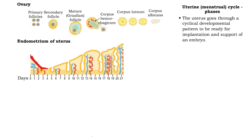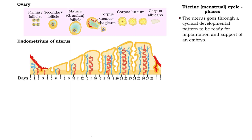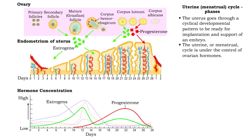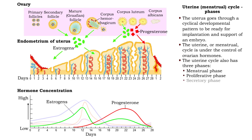The uterus goes through a cyclical developmental pattern to be ready for implantation and support of an embryo. The uterine or menstrual cycle is under the control of ovarian hormones. The uterine cycle also has three phases: the menstrual phase, the proliferative phase, and the secretory phase.